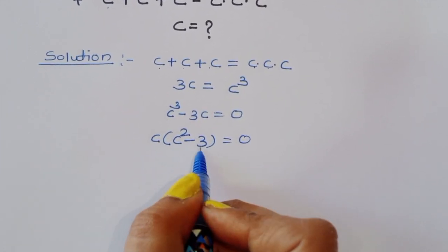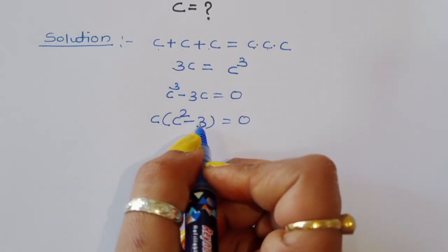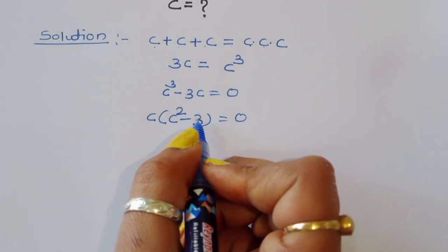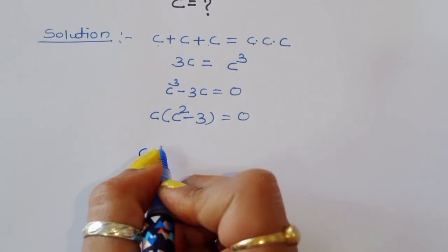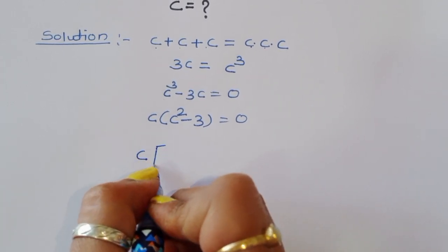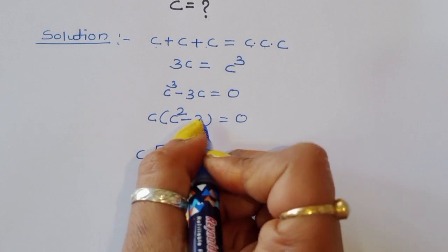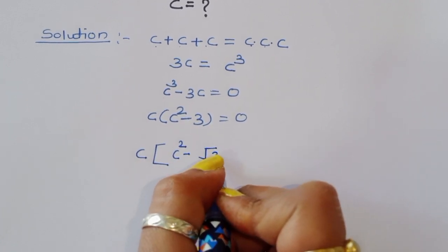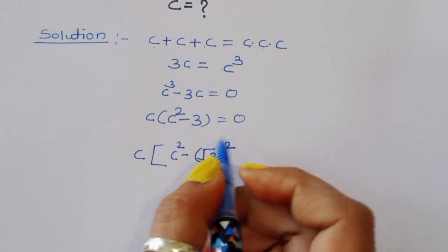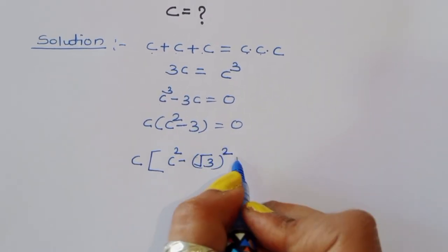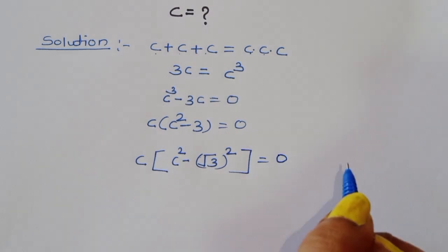We have c times (c squared minus 3) is equal to 0. Now, making the 3 into a square term, we can write c times (c squared minus (square root of 3) squared) is equal to 0.